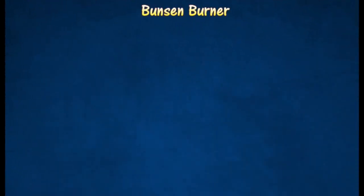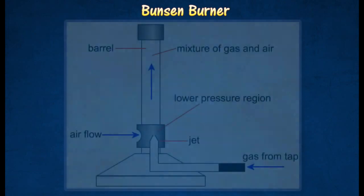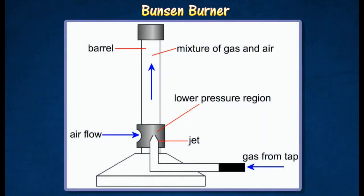When a Bunsen burner is connected to the gas supply, gas gusts out through the jet with high speed, creating a low pressure region around the jet. The outside air at atmospheric pressure, which is higher, is sucked into the low pressure region. The mixture of gas and air which enters the barrel is then burned to produce a flame.